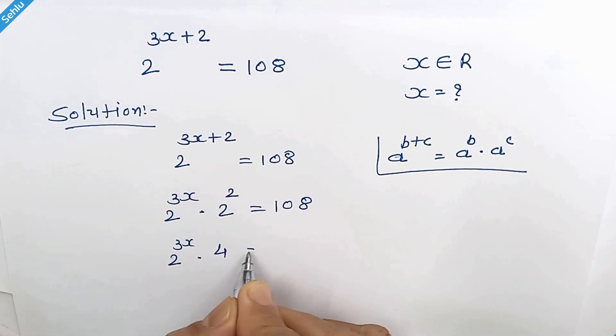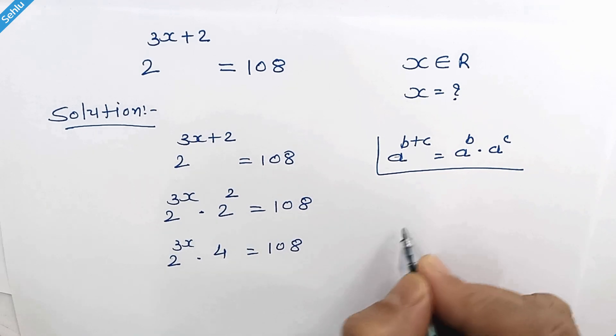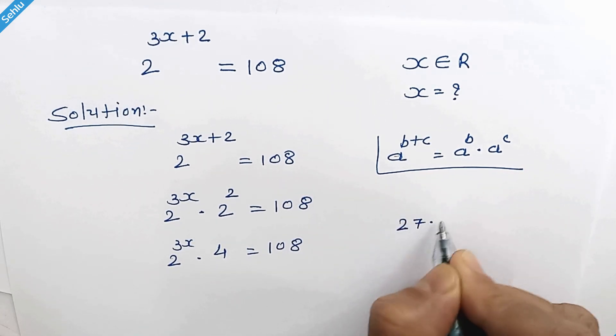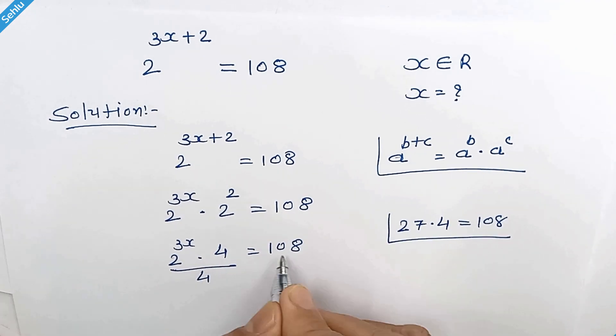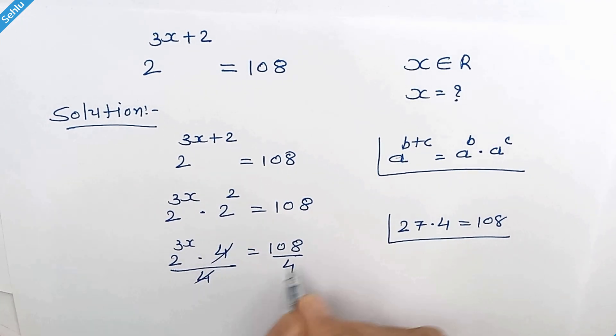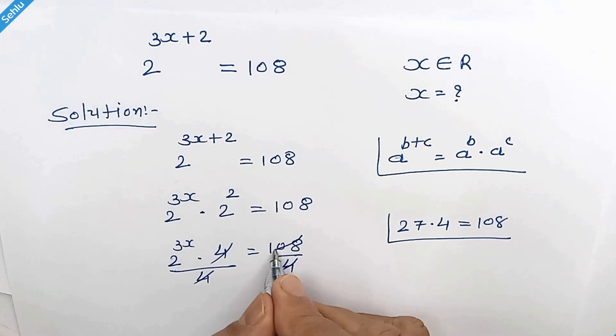2 square is 4. Now 27 times 4 is 108, so if we divide by 4 both sides, this 2 gets cancelled out and here we have 27.